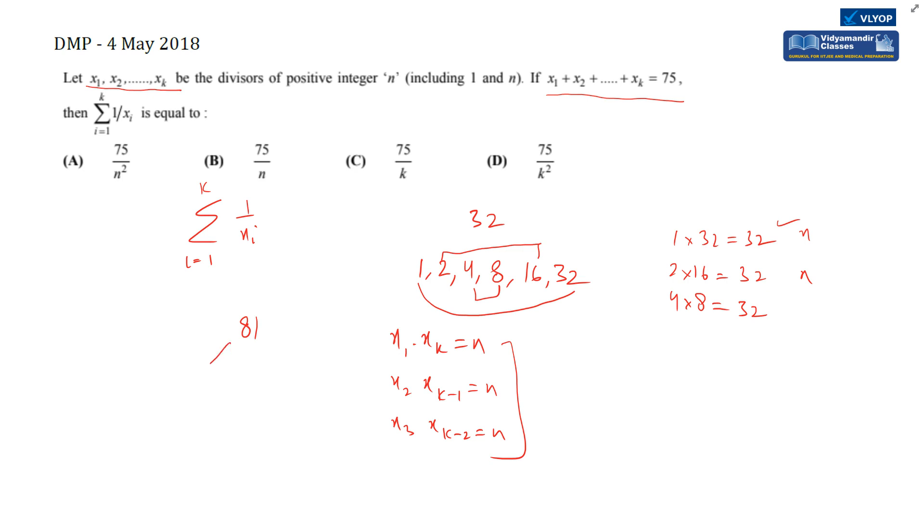For 81, the divisors are 1, 3, 9, 27, 81. Again, 1 × 81 = 81, 3 × 27 = 81, and 9 × 9 = 81. The same pattern holds.